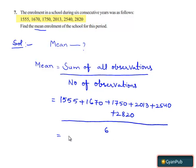Which is equals to 12348 by 6 which is equals to 2058. Therefore mean enrollment of the school for this period is equals to 2058.